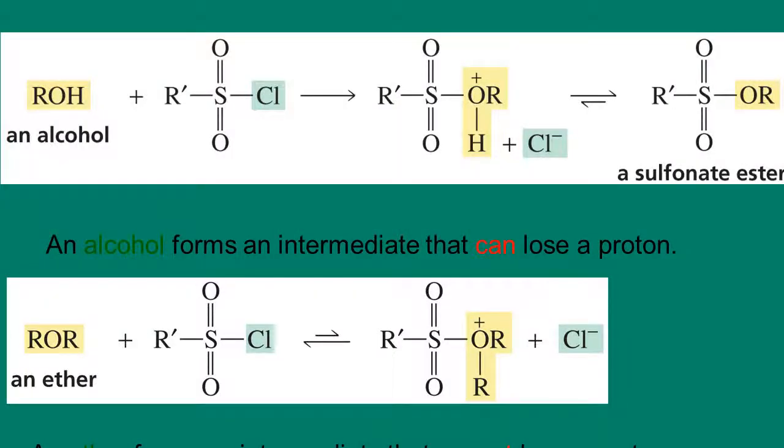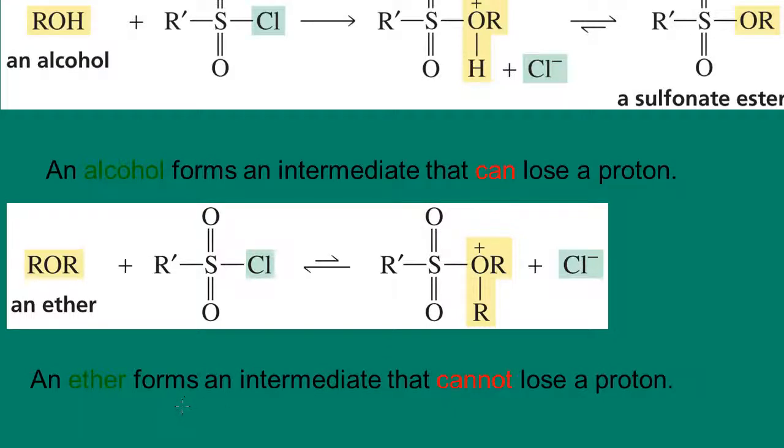Other reagents that could be used to activate an alcohol so that they'll undergo these substitution reactions, one of them was phosphorus trichloride. But, these types of compounds cannot be used to activate an ether. Remember that an alcohol will form an intermediate that is able to lose a proton, which means that a very stable sulfonate ester can be formed. Now, in the case of an ether, the intermediate that's formed does not have a proton that can be lost. So, in this case, the intermediate, because it cannot lose a proton, would not be able to form the more stable product. In this case, a sulfonate ester. So, these types of compounds cannot be used to activate an ether.